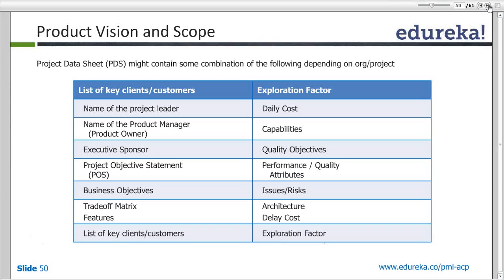The project data sheet includes business objectives, features, statements, daily costs, and capabilities. This is how you define your product vision and scope in a product data sheet.